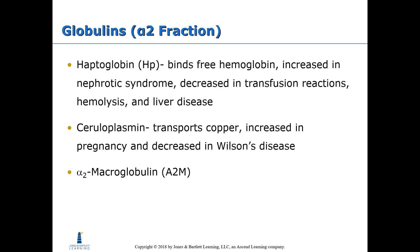The alpha-2 fraction consists of haptoglobin, which binds free hemoglobin. It is increased in nephrotic syndrome and decreased in transfusion reactions, hemolysis, and liver disease. Ceruloplasmin transports copper and is increased in pregnancy and decreased in Wilson's disease. Macroglobulin is another protein in this fraction.